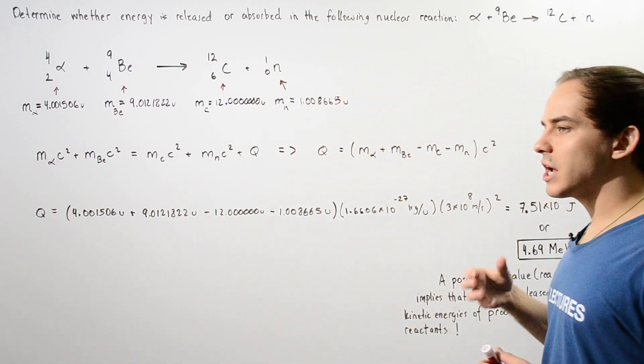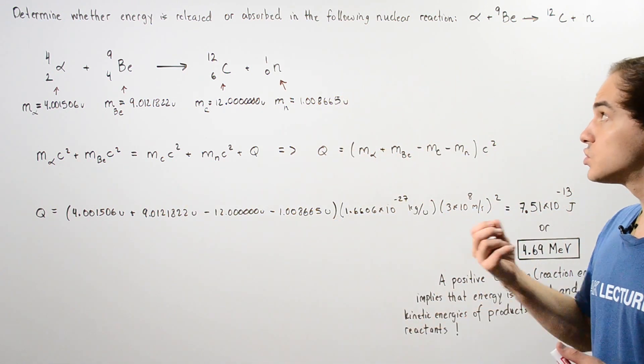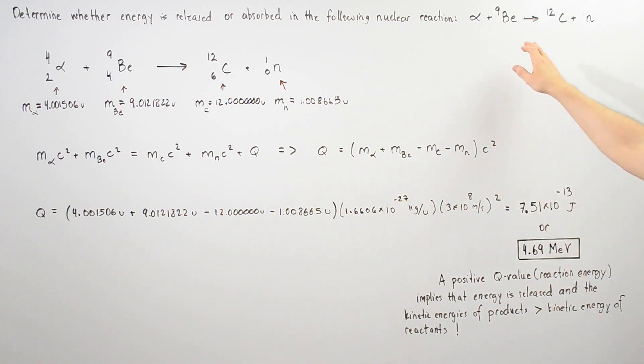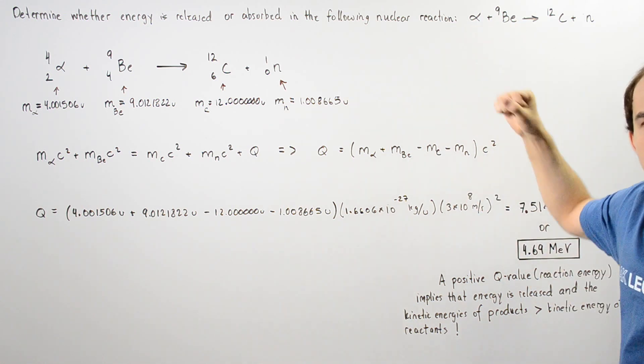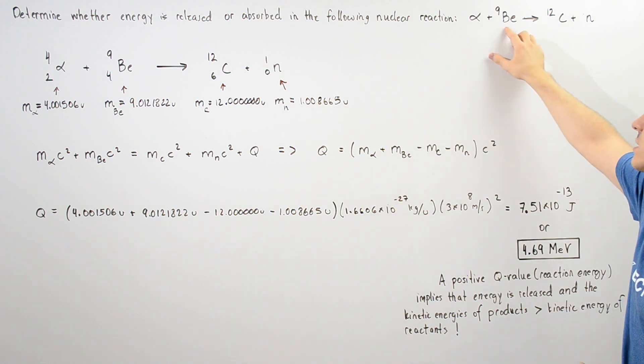Determine whether energy is released or absorbed in the following nuclear reaction. We have an alpha particle that collides with the nucleus of a beryllium atom, producing a carbon atom and releasing a neutron.